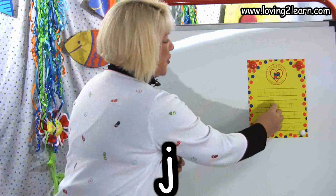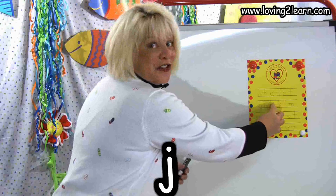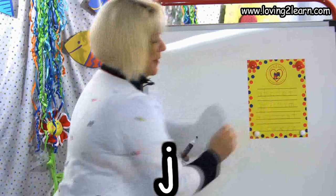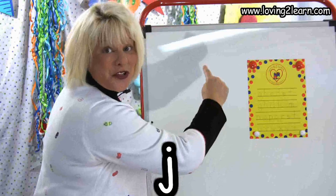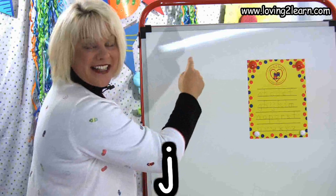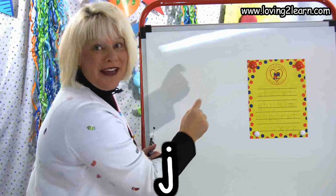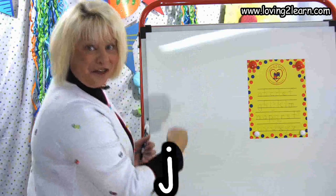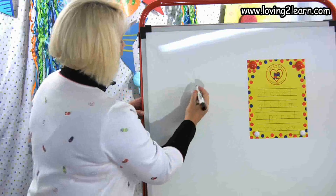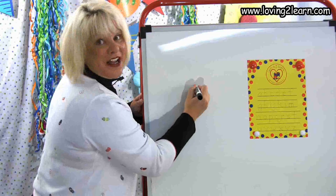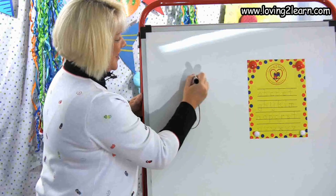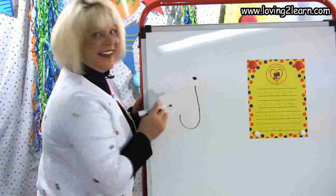The next letter is the letter J. J is straight line down, fish hook in, dot on top. Let's do it in the air: straight line down, fish hook in, dot on top. Let's do it on the whiteboard: straight line down, fish hook in, dot on top. There's the small letter J.